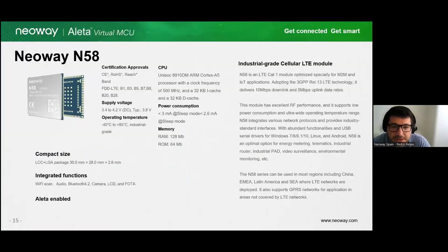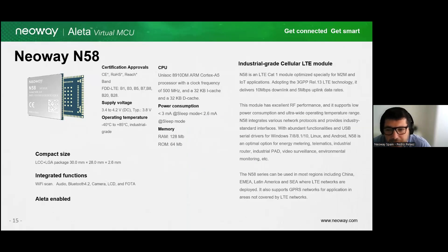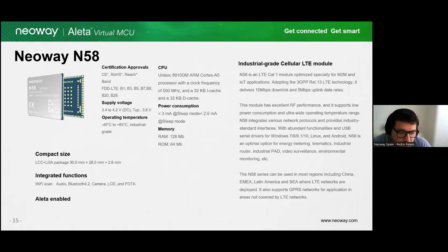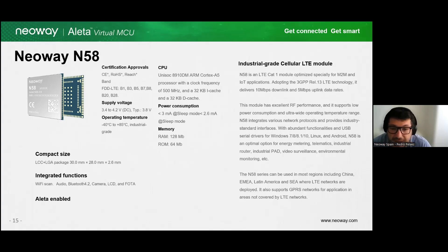Here is the first approach to the physical world. Our N58 module is a powerful Cat1 BIS module that brings a lot of features on the hardware side. Aleta is ready to be used on the N58, and we will help you to build complete devices easily with just this module, which will help you reduce the bill of materials of your project significantly.